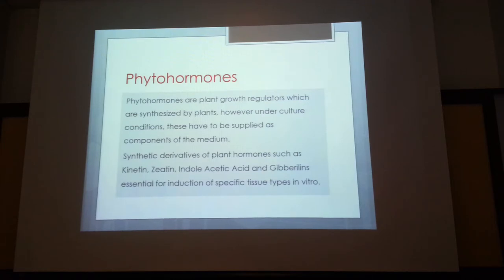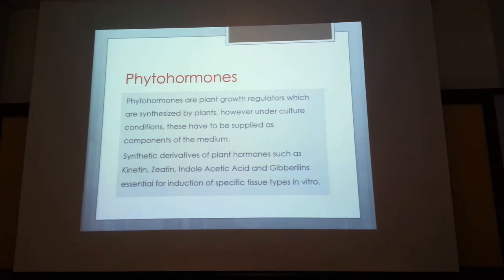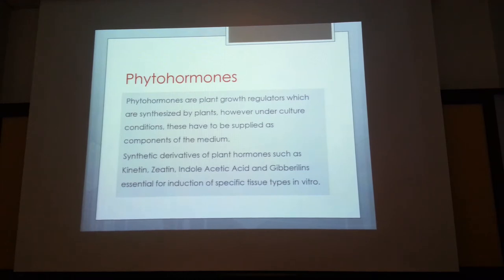Rooting compounds are indole-3-acetic acid (IAA) and its derivative indole-3-butyric acid (IBA). Under normal circumstances the tip of the plant produces auxin, which propagates downward and induces different tissue types. Auxin becomes active in the dark portion below the soil. For root induction in tissue culture, we expose tissue to IAA in the medium and keep it in the dark for one to two days, because IAA breaks down when exposed to light.